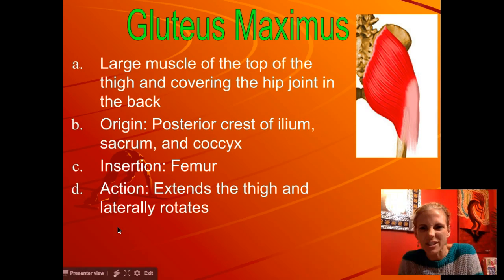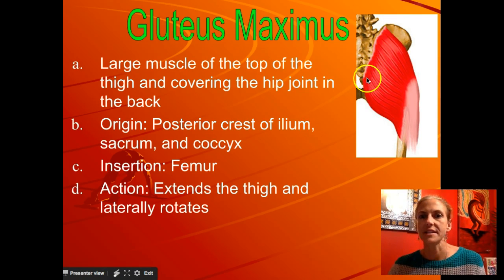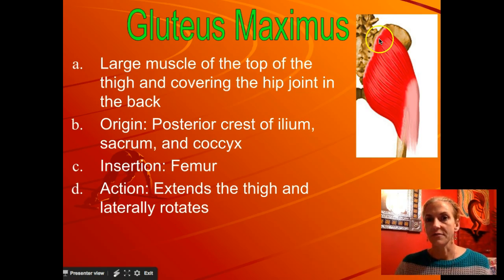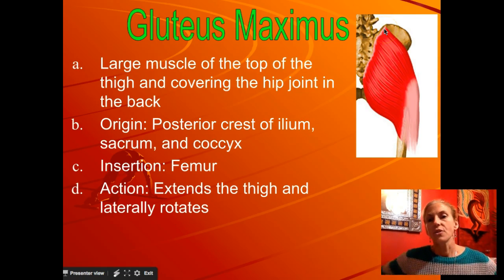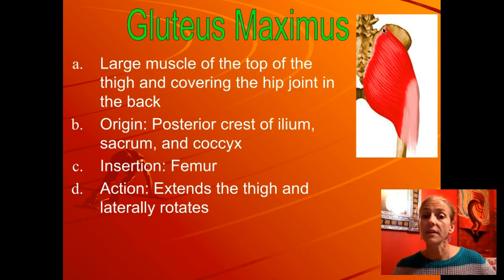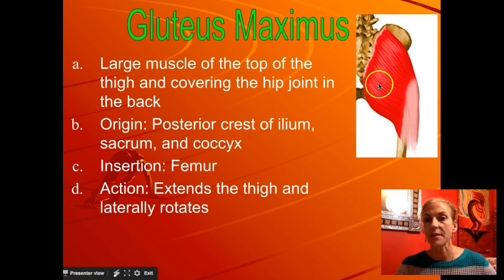The gluteus maximus has quite a long origin — notice that pinkish line, that's the connective tissue. This is a pretty large muscle covering basically your hip and butt. The origin is the posterior crest of the ilium — the crest is what you typically think of as your hips, it's the ridge — and it continues through the sacrum all the way down to the coccyx, then starts on the greater trochanter of the femur.